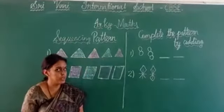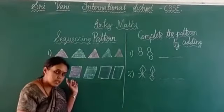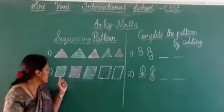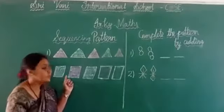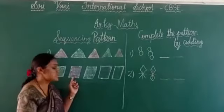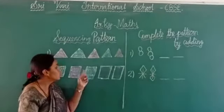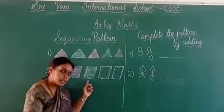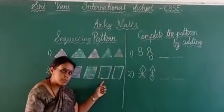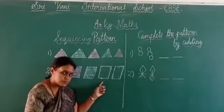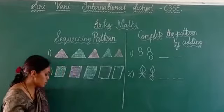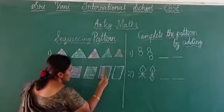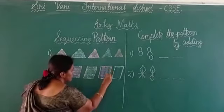Shall we move to the next one? What is this? It is a square. What is the first color of this square? It is green color. What is the next color of this square? It is white color. What is the next color of this square? It is green color. So what color will be coming to the next square? Tell me children — we are going to color the next square with white color. What color? White color.